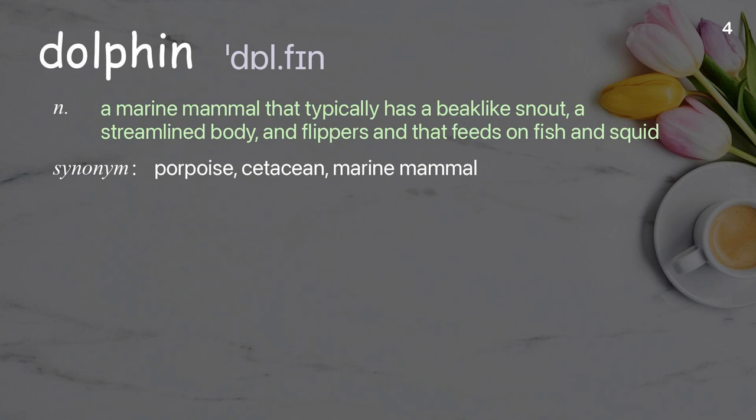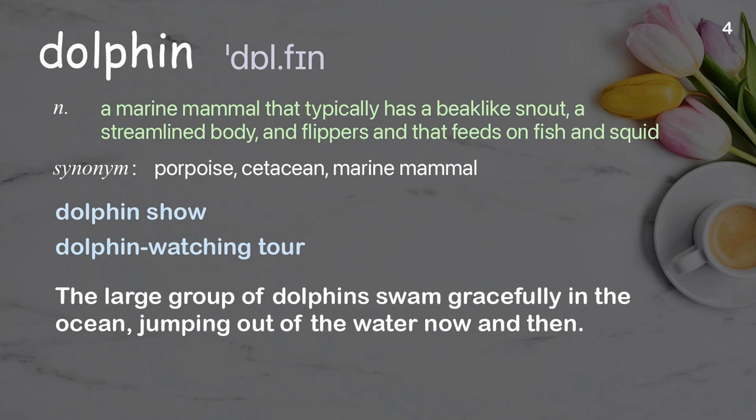Dolphin: a marine mammal that typically has a beak-like snout, a streamlined body, and flippers, and that feeds on fish and squid. Examples: the large group of dolphins swam gracefully in the ocean, jumping out of the water now and then.